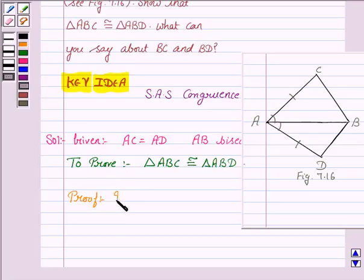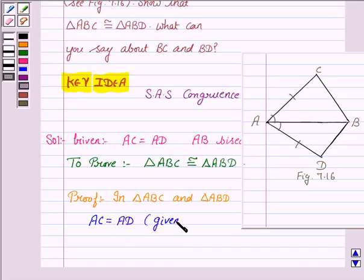Now, in triangle ABC and triangle ABD, AC is equal to AD. It is given to us and angle BAC is equal to angle BAD because we are given that AB bisects angle A.